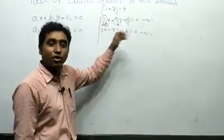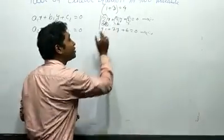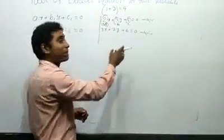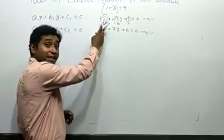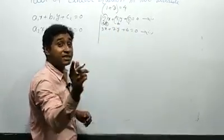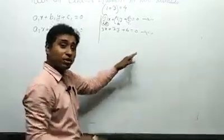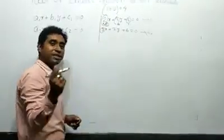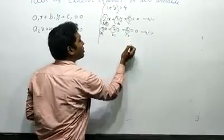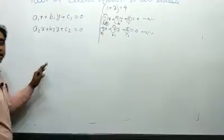So in the form ax + by + c = 0, for the first equation the values are a₁, b₁, c₁, and for the second equation the coefficient of x is a₂, coefficient of y is b₂, and the constant is c₂.